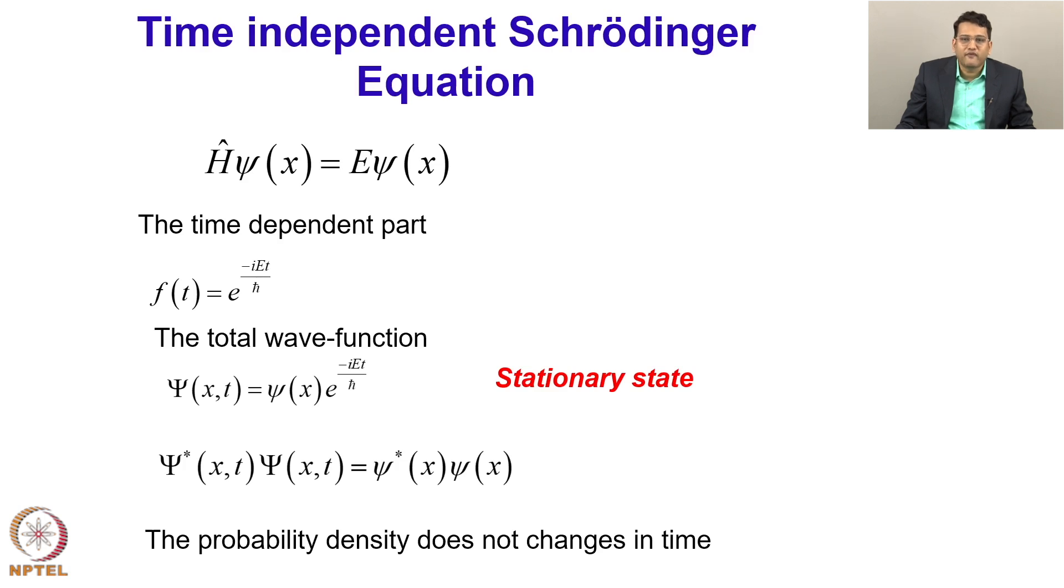So, even though the wave function is evolving in time, the probability density will not change. So, these five postulates of Schrodinger equation we are now going to use to see the solution of hydrogen atom in this case.